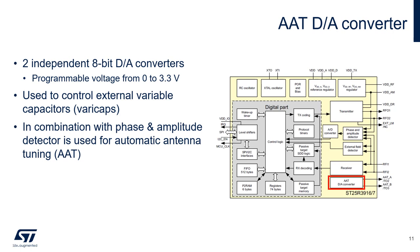The ST25R3916 has two 8-bit D-to-A converters used for the auto antenna tuning function. These DACs provide the input signal to the voltage-controlled caps, which are used to adjust the antenna matching. When used with the amplitude and phase detector, antenna tuning becomes automatic.